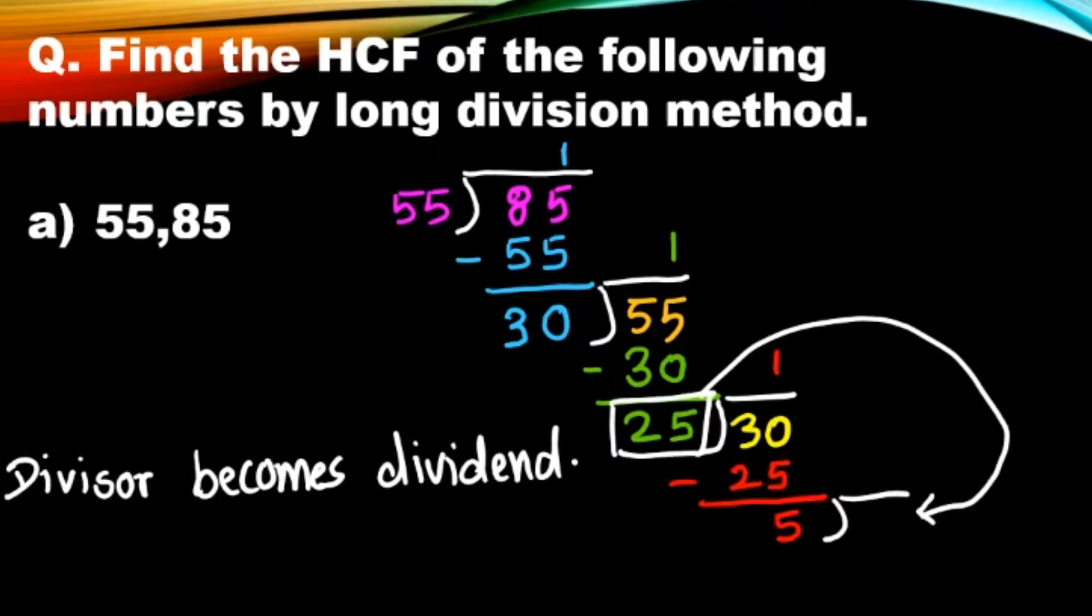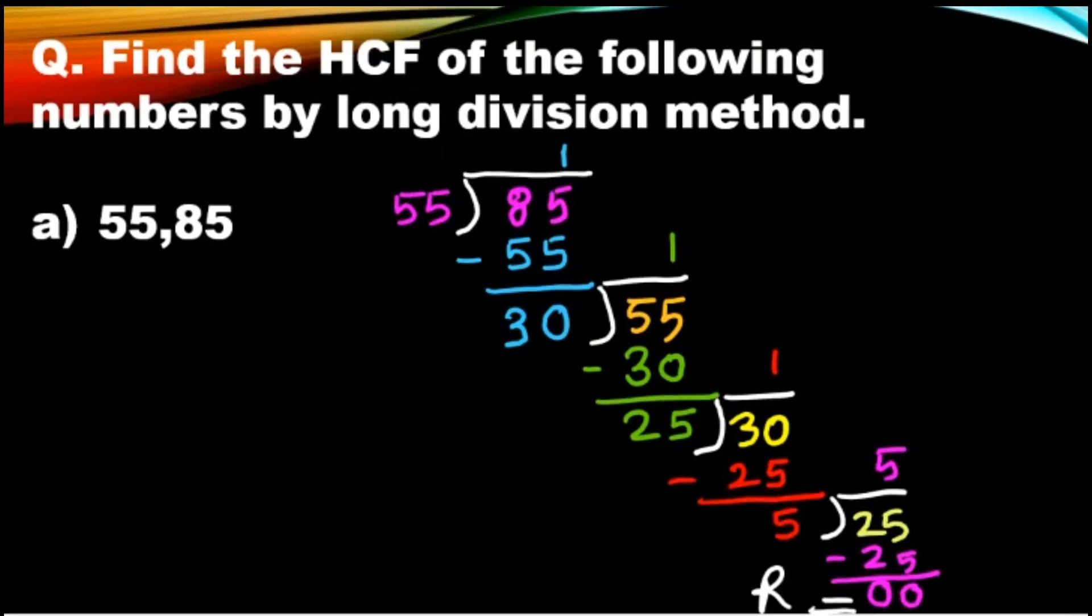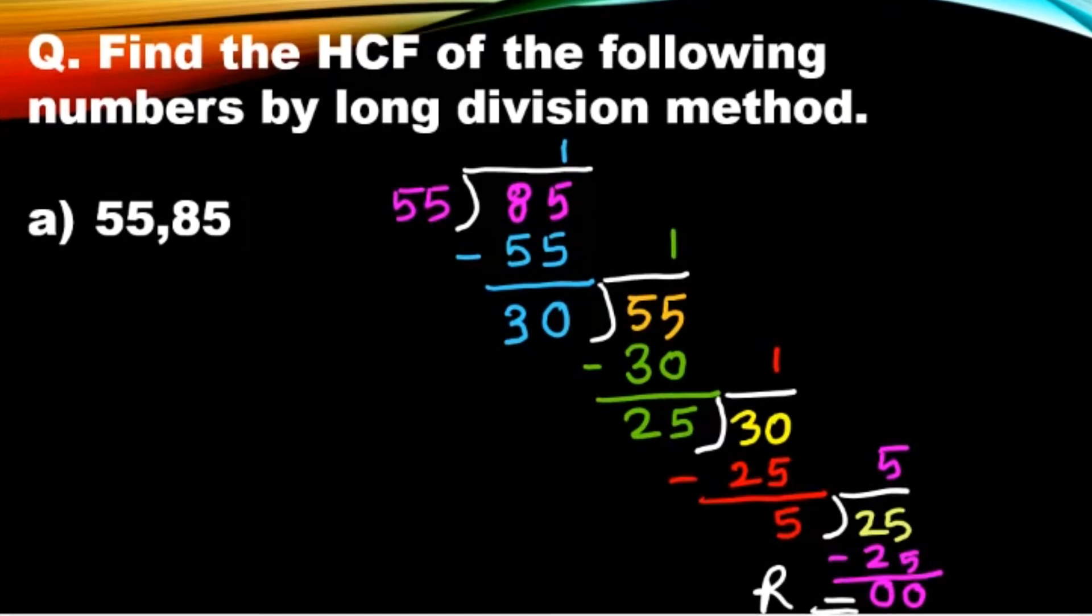Here, 5 fives are 25, and remainder is now 0. Children, we have to repeat the long division method up to remainder 0. Till we get remainder 0, we have to repeat the steps.